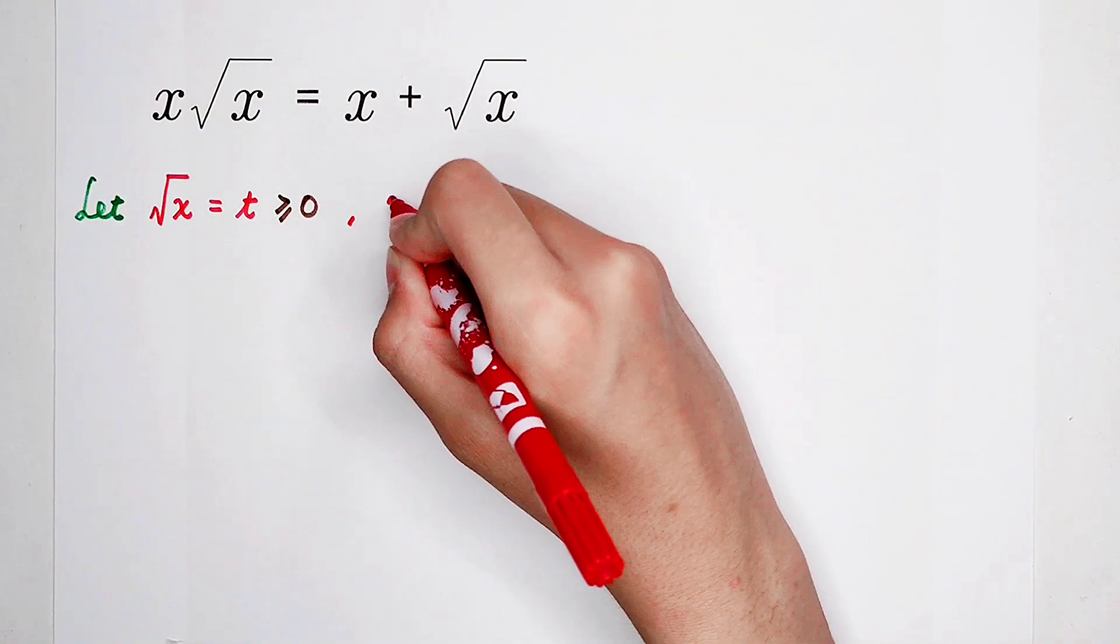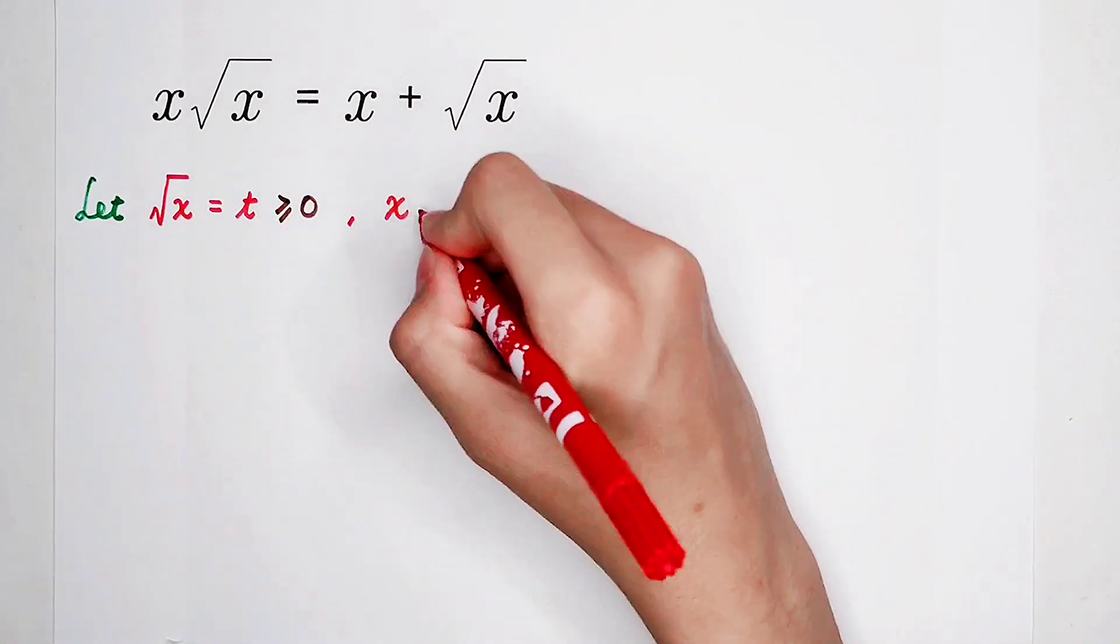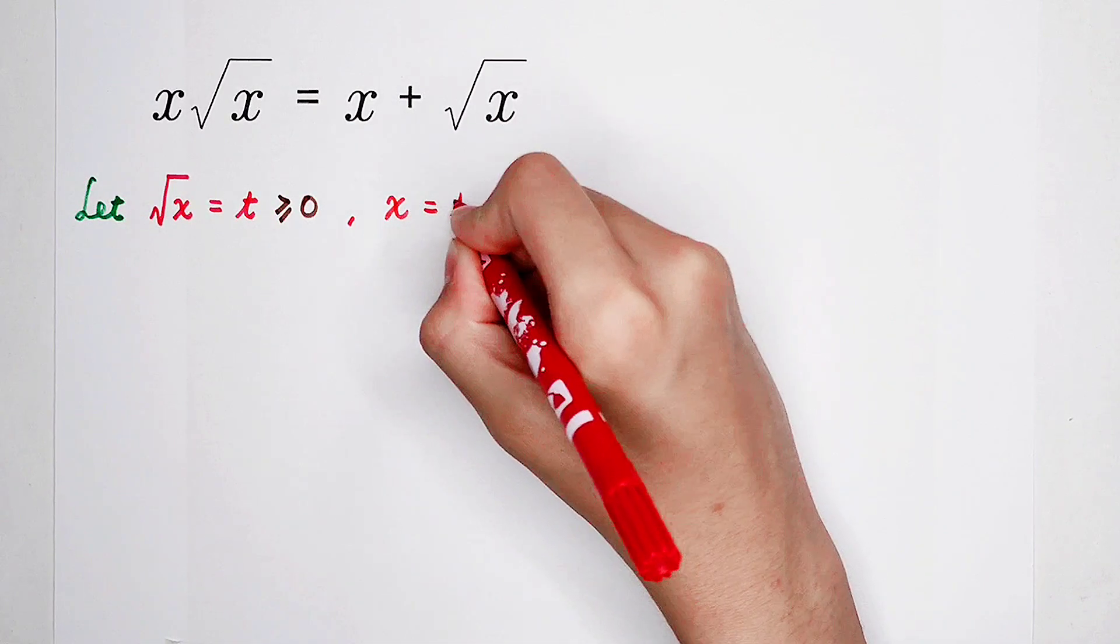So then, square root of both sides, we can get the relationship between x and t. So that is, x is equal to t squared.